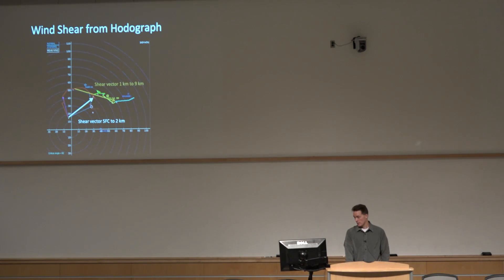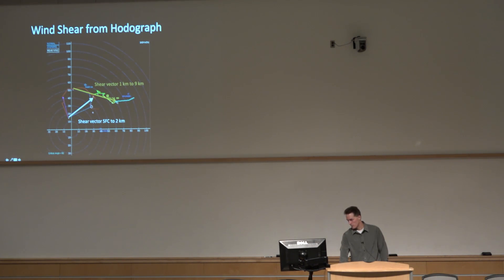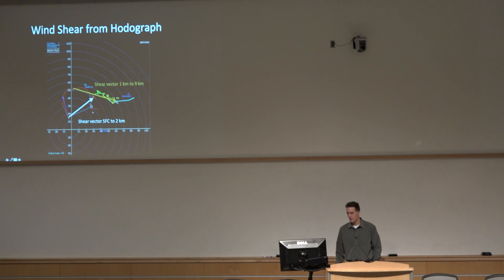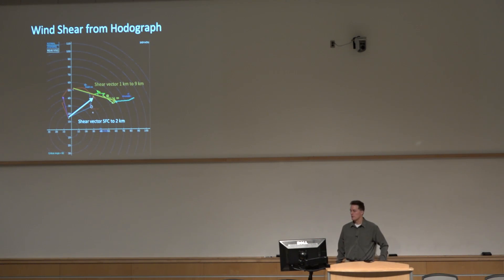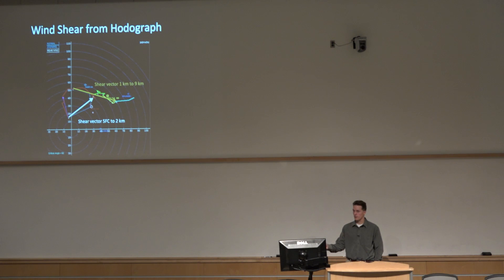You can do this from any level — we can start at one and go all the way up. Following the numbers, this is the nine-kilometer AGL level — that's the shear vector from one to nine. It's a longer vector, so the shear through that layer is even stronger.